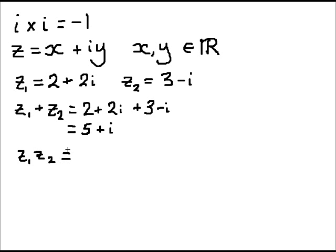z₁z₂ is just 2 plus 2i multiplied by 3 minus i. And then expanding the brackets gives me 2 times 3 is 6, 2i times 3 is 6i, 2 times minus i is minus 2i, and 2i times minus i is minus 2i squared.